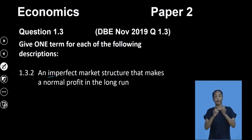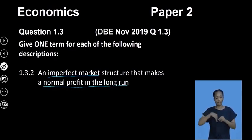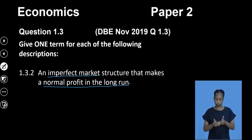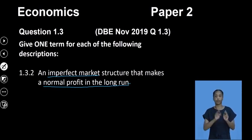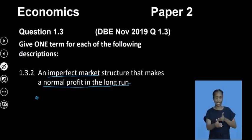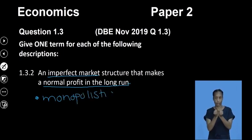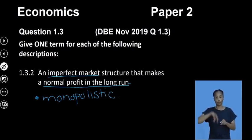Question 1.32: an imperfect market structure that makes a normal profit in the long run. We can eliminate monopoly because it experiences supernormal profit in the long run. The same goes for oligopolies — they experience economic profit in the long run. We are left with only one market structure that experiences normal profit in the long run, and that is monopolistic competition.